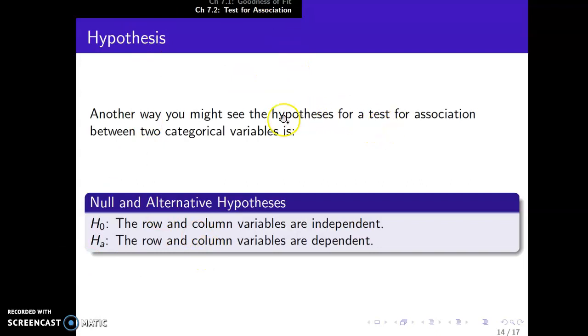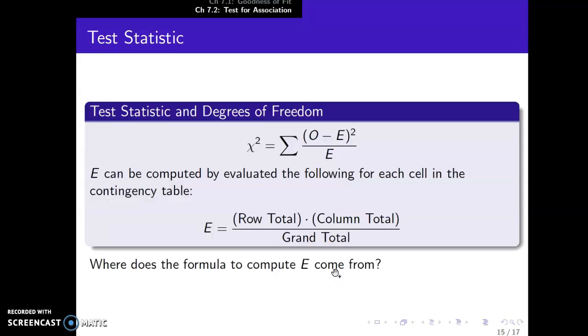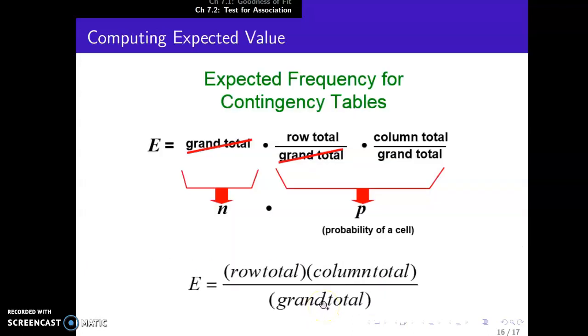Alright, so another way you might see a hypothesis test for association is set up like this: You assume the row and column variables are independent. Again, that's the same as no association. And the alternative is the row and column variables are dependent, which is the same as that there is some association. Alright, so the test statistic is calculated the same exact way—the difference between the observed and expected counts squared over expected counts. And the expected counts can be computed by evaluating the following for each cell in the contingency table: row total times column total over grand total. Where does this formula come from? I'm going to go over that in our next class period, and it comes from this, but I want to explain where this comes from the next time we meet for class.